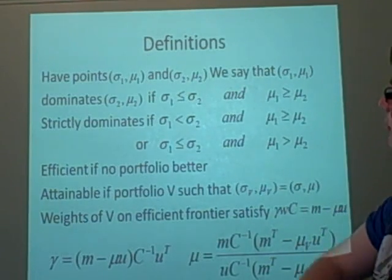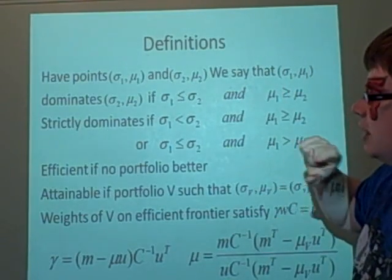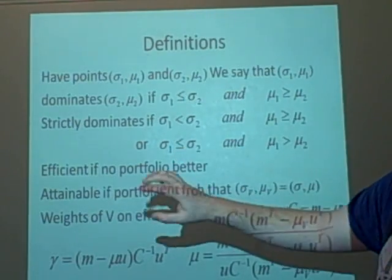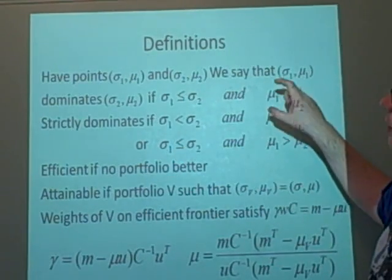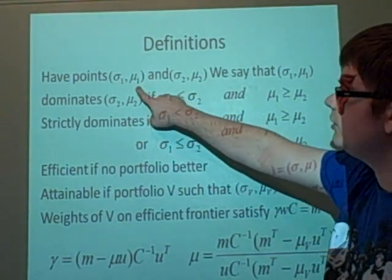So let's say we've got our minimum variance line, and then we also have a risk-free asset, so that would just be a straight line. So if we plot a point on that using the standard deviation and the mean,